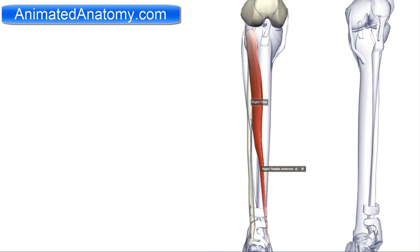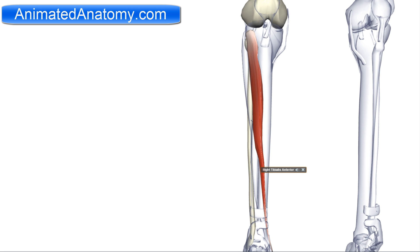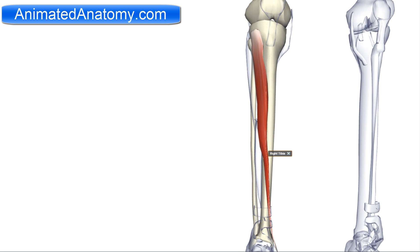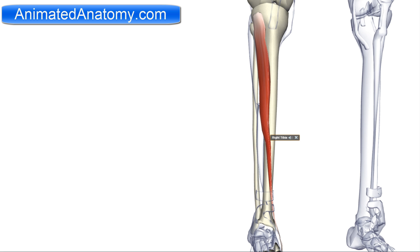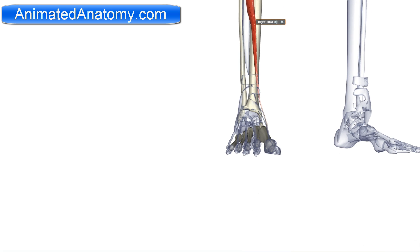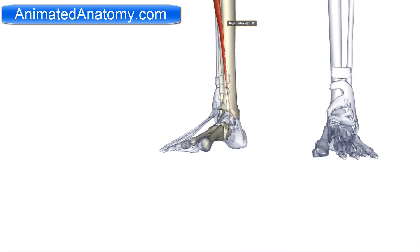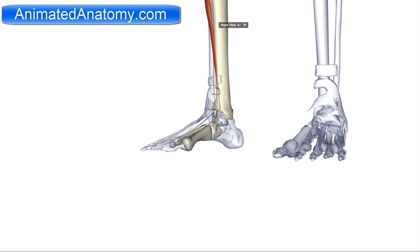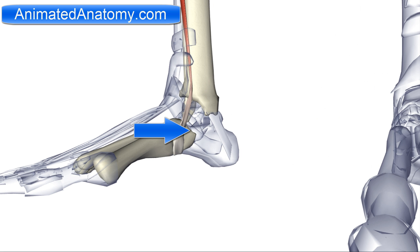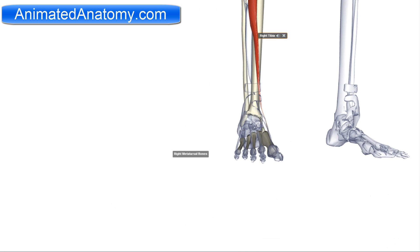The tibialis anterior has its origin on the body of the tibia. It inserts medially on the medial cuneiform and also on the base of the first metatarsal bone. The function of this muscle is the inversion of the foot and also the dorsiflexion of the foot. It is innervated by the peroneal nerve.